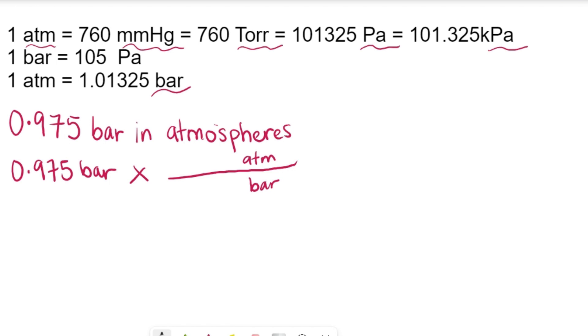So you have 0.975 bar times atm divided by bar. We have to put the information up top and down below. If we look at the information here, we see that one atmosphere is equivalent to 1.01325 bar.